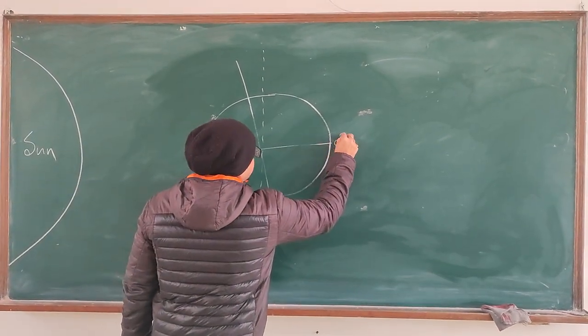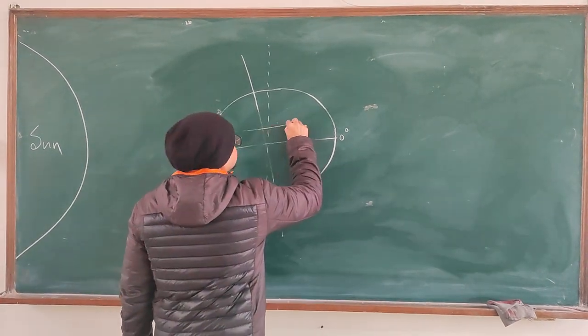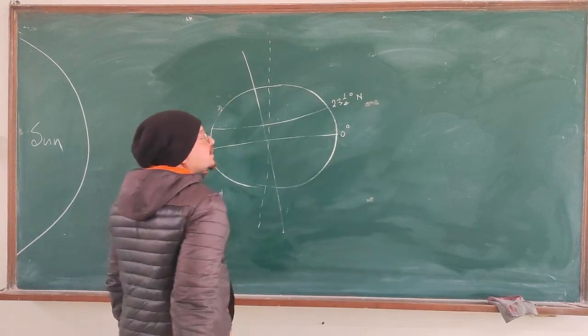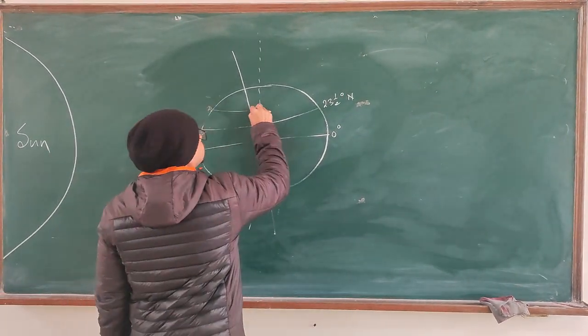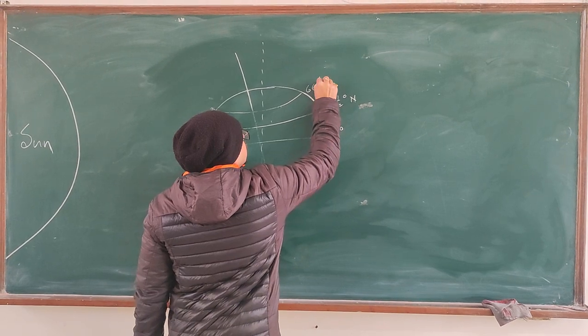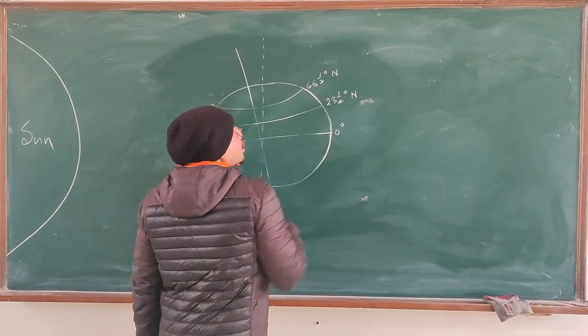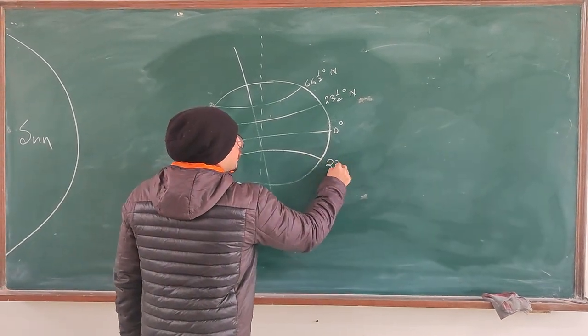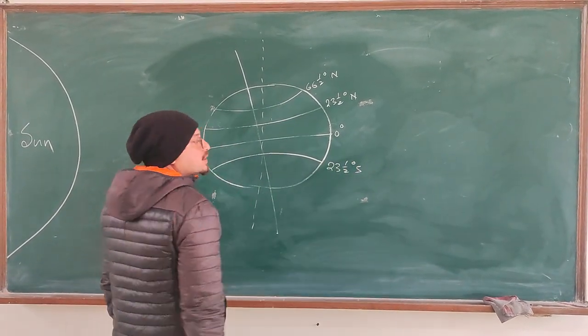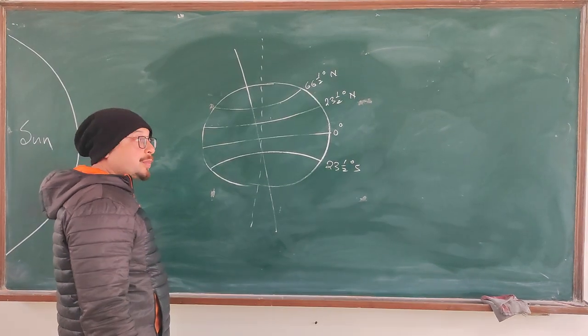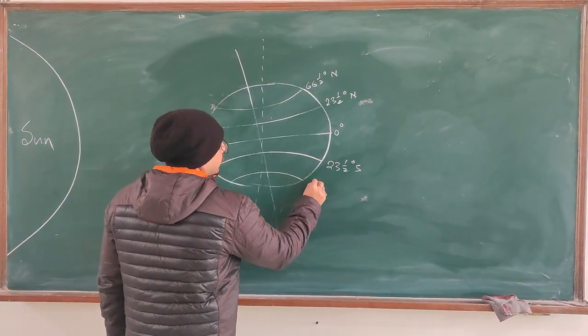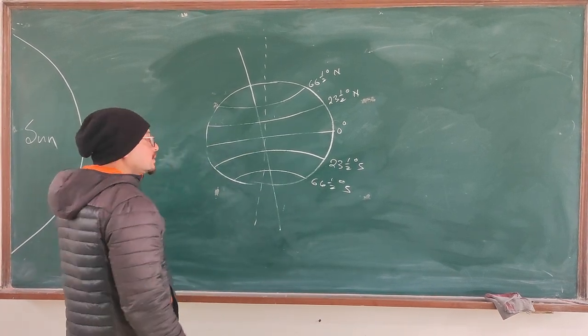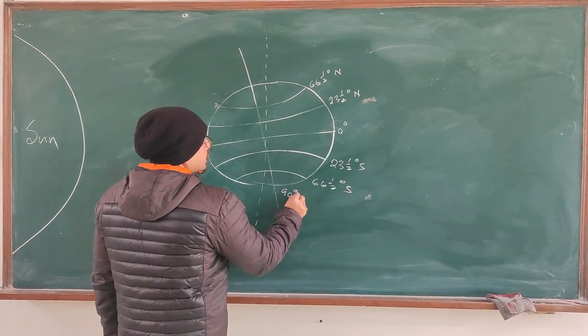This is the equator, 0 degrees. 23 and a half degrees north, Tropic of Cancer. 66 and a half degrees north, the Arctic Circle. 23 and a half degrees south, the Tropic of Capricorn. 66 and a half degrees south, the Antarctic Circle. And 90 degrees south pole, 90 degrees north pole.